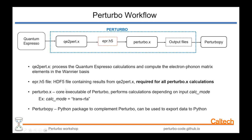After you've generated the EPR file, you can run the second Perturbo executable, which is Perturbo.x. This is the core executable of Perturbo, and the calculations it performs depend on an input parameter called calc_mode. For example, one calc mode could be trans-RTA — this is essentially a transport calculation. It solves the Boltzmann transport equation in the relaxation time approximation, and computes things like the mobility and conductivity.